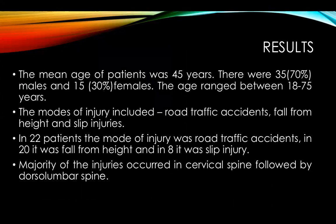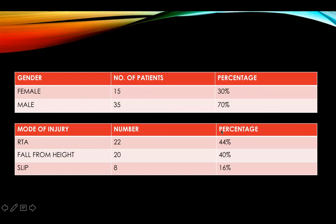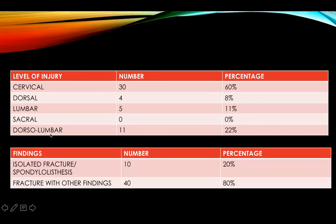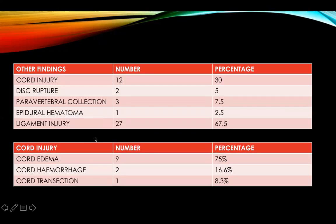The results show a mean age of 45 years, with 35 males and 15 females. The modes of injury were RTA, fall from height, and slip injuries — in 22 patients it was RTA. The majority of injuries occurred in the cervical spine. Isolated fractures were seen in 10 patients. Other findings included cord injury, disc rupture, paravertebral collection, epidural hematoma, and ligament injury. Cord injury subtypes included cord edema, hemorrhage, and transection.